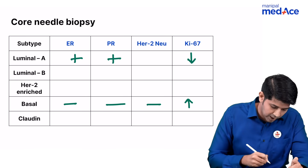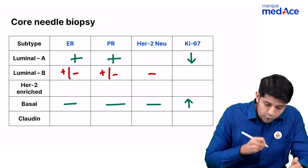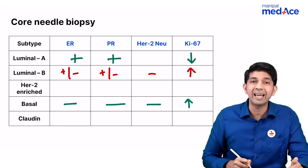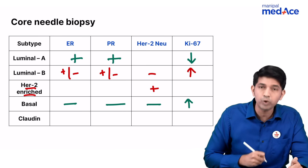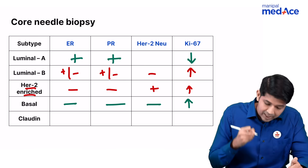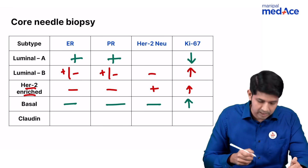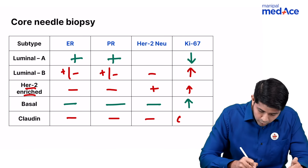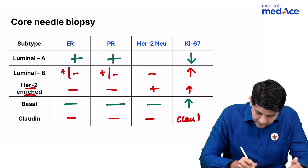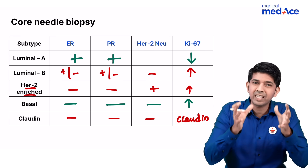Now let's fill up the rest of the chart. Luminal B can either be ER/PR positive or negative, HER2-new will be negative, and Ki67 will be elevated. HER2-new enriched means only HER2-new is positive and the rest is negative, with Ki67 high. The Claudin subtype is a variant of the Basal subtype — everything is negative, and instead of Ki67, you look for the Claudin gene. This is how you subdivide CA breast based on the various molecular subtypes. Thank you.